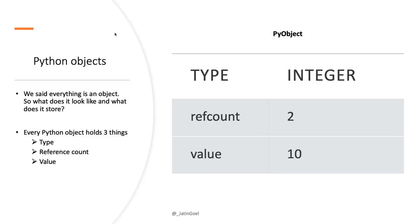This is how a Python object looks internally. It has three values associated to it: the type, the reference count, and the value. The type defines whether it's an integer, string, or other type. The ref count tracks references to that object. When we did 'x equals 10' and 'y equals 10', the ref count was incremented to two.